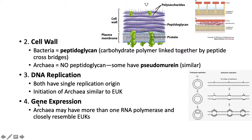Gene expression: archaea have more than one RNA polymerase. Bacteria only have one RNA polymerase, and that RNA polymerase in archaea is more closely related to eukaryotes. They think prokaryotes started first, then archaea branched off, and then from archaea came eukaryotes.